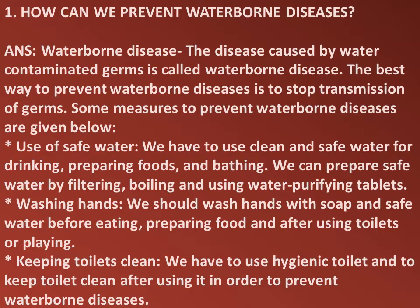Answer: A waterborne disease is a disease caused by water contaminated with germs. The best way to prevent waterborne disease is to stop the transmission of germs. Some measures to prevent waterborne diseases: use of safe water — we have to use clean and safe water for drinking, preparing food, and bathing. We can prepare safe water by filtering, boiling, and using water purifying tablets. Washing hands — we should wash hands with soap and safe water before eating, preparing food, and after using toilets or playing.